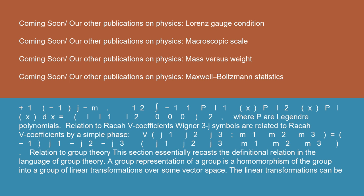Relation to Racah V coefficients: Wigner 3J symbols are related to Racah V coefficients by a simple phase: V(J1 J2 J3; M1 M2 M3) = (-1)^(J1 - J2 - J3) * (J1 J2 J3; M1 M2 M3).